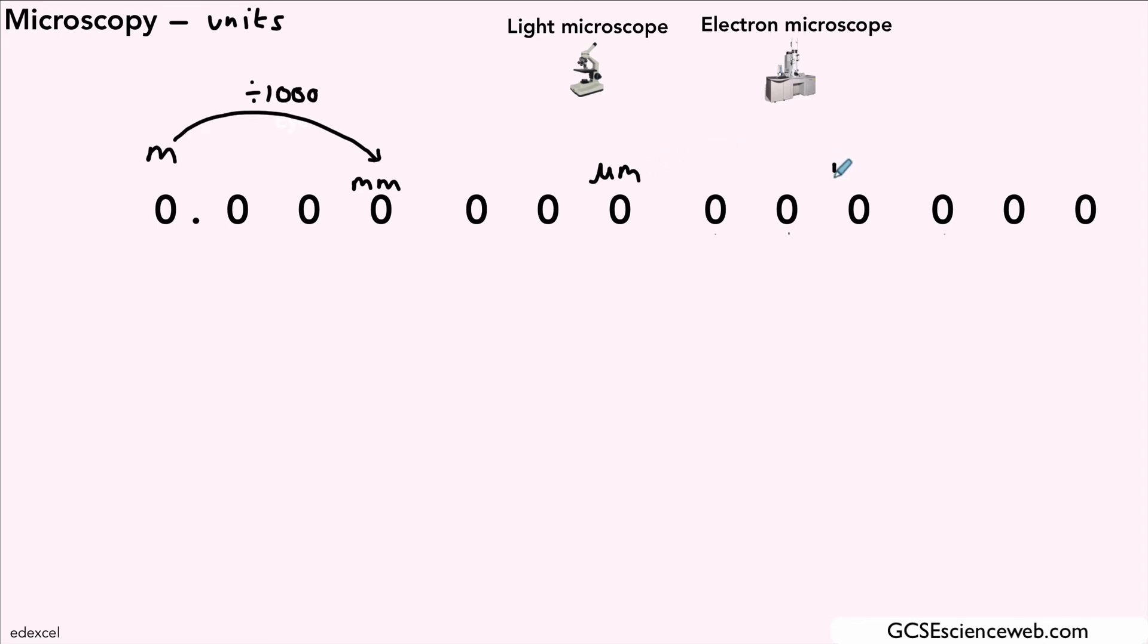Cut the micrometers again into another thousand pieces and we get what we call nanometers. So these are our micrometers and nm there is our nanometers. If we sliced our nanometers into yet another thousand pieces, we would then get our picometers.